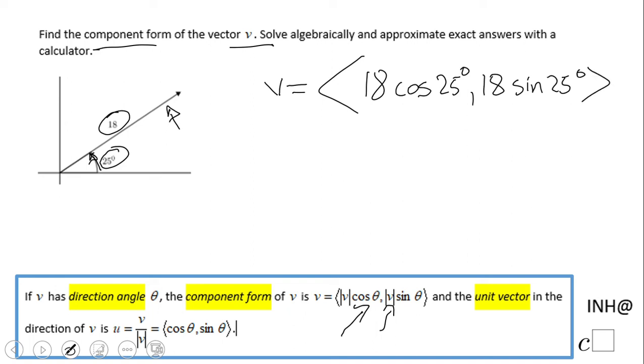So I'm gonna use a calculator to get the x component of vector V. I'm gonna approximate to the nearest tenth. I have 16.31, and let's do the same for the y component. I have 7.6.